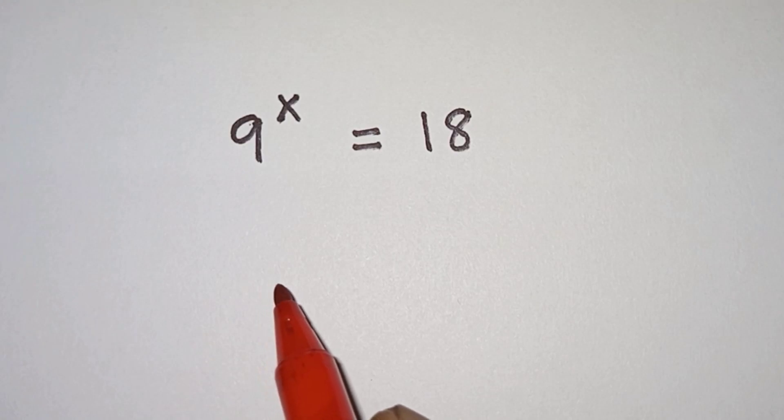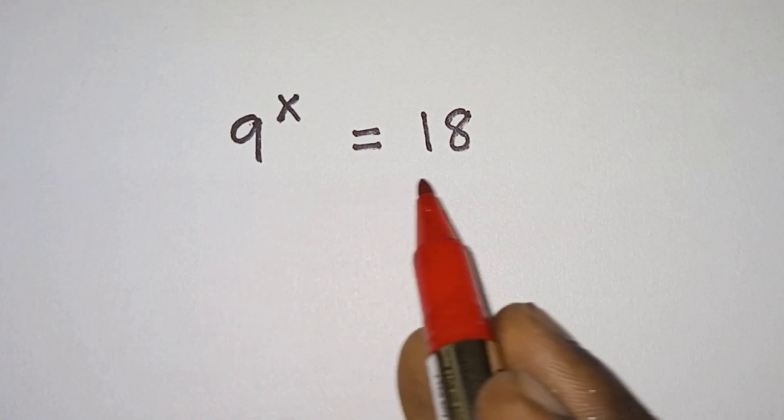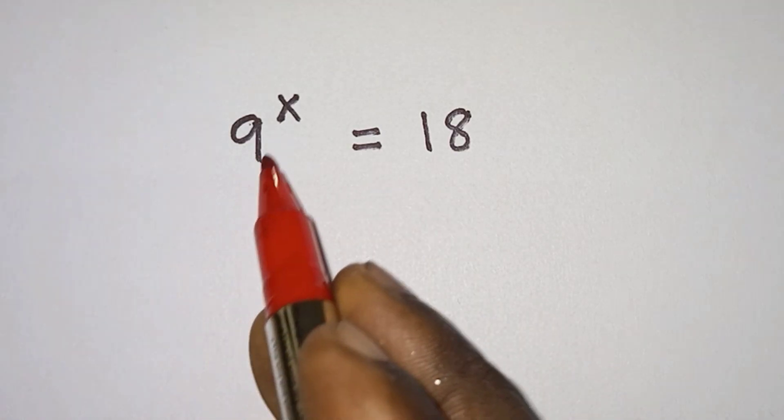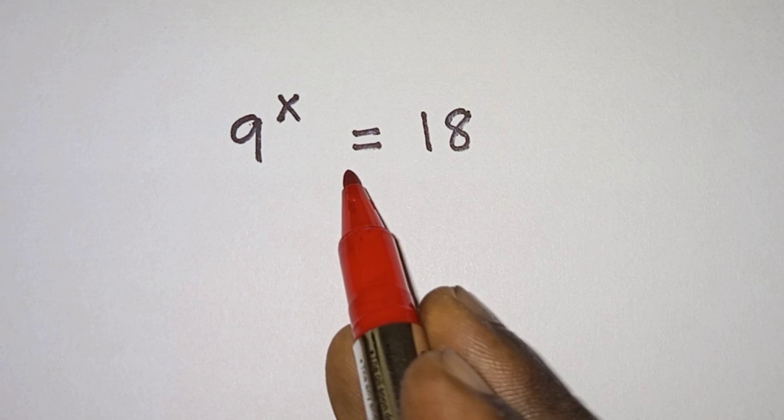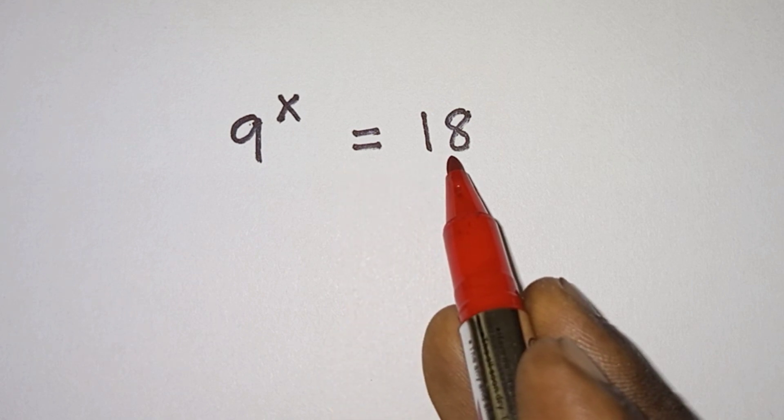Hello everyone. How do we solve for x in this equation: 9 to the power x is equal to 18?